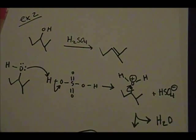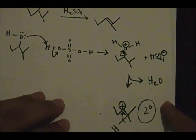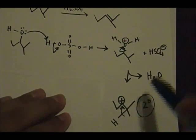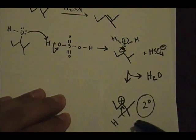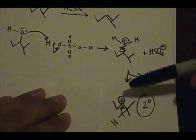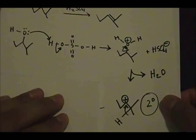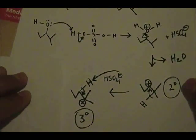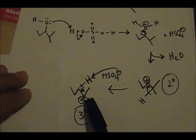The next step is you kick off the leaving group and form your secondary carbocation intermediate. Then you do a hydride shift — you move the hydrogen to a position where you can form a tertiary carbocation, substituted by three different things. That is the tertiary carbocation intermediate, and this carbon now bears the positive charge.